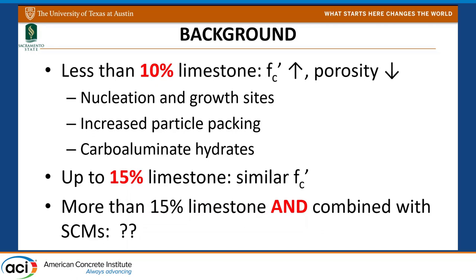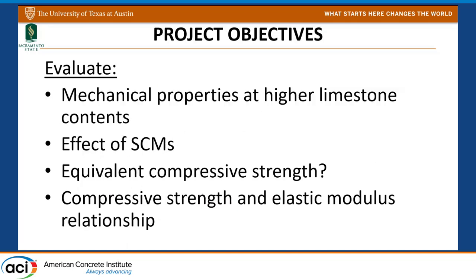People have been able to prove that up to about 15 percent limestone you can expect similar compressive strength. The question we wanted to answer was: 10 percent sustainability benefit is great, but can we go further? Can we really push the envelope toward greener, lower-clinker mixes by putting more limestone into cement and combining it with SCMs?